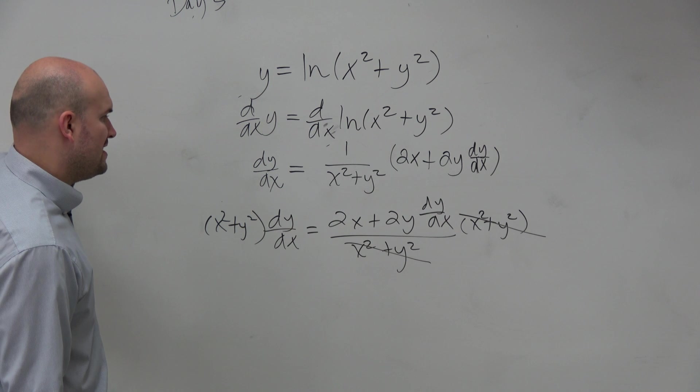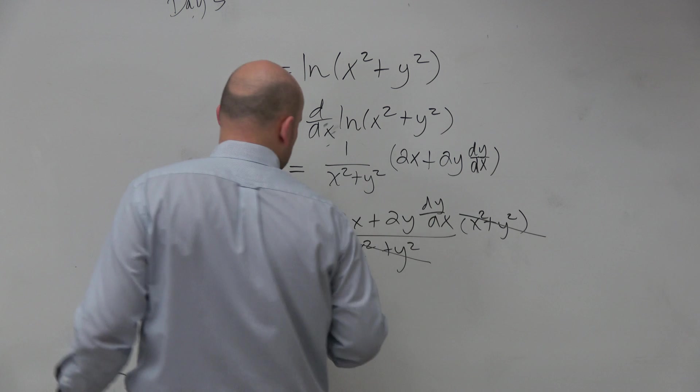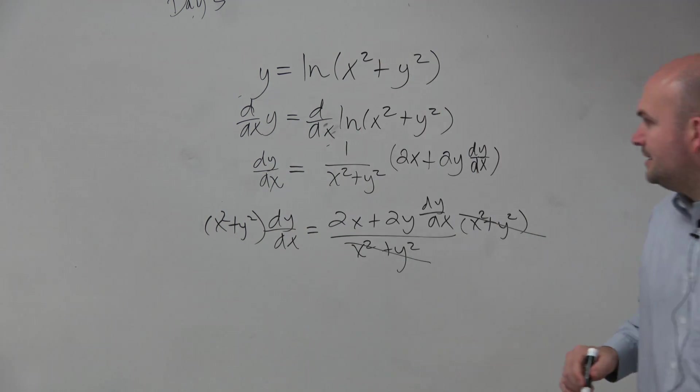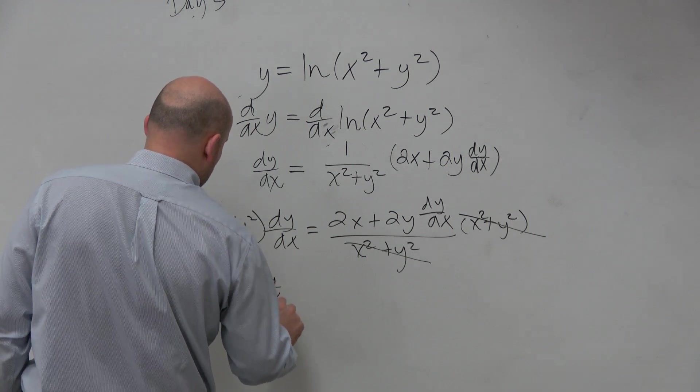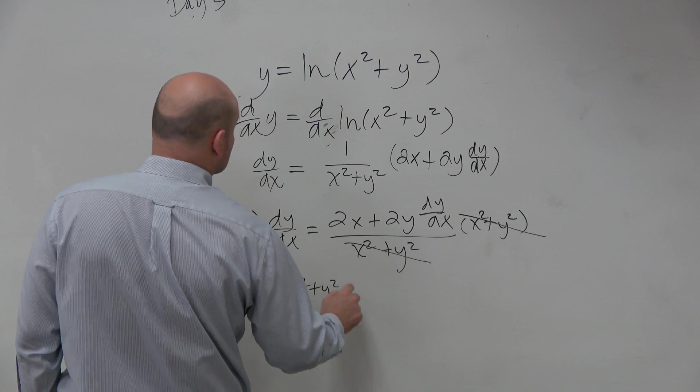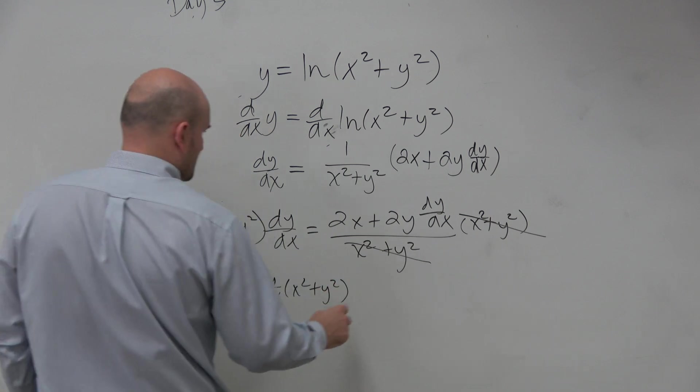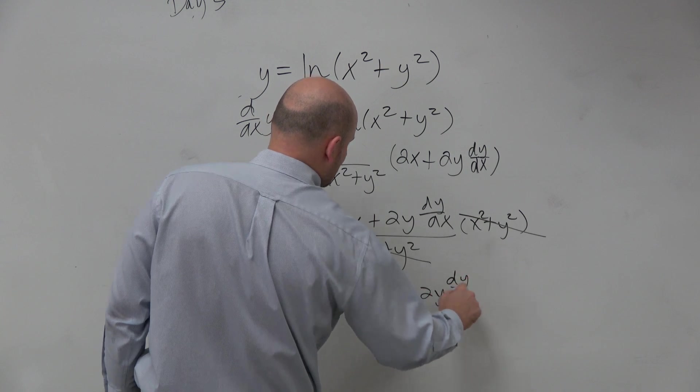So I multiply that on both sides. And then what I would do is I would subtract 2y. So anyways, let's look at it over here. We have dy dx times x squared plus y squared equals 2x plus 2y dy dx.